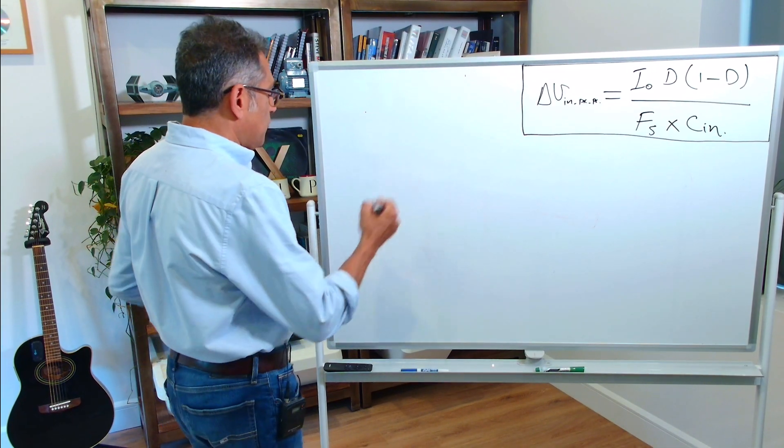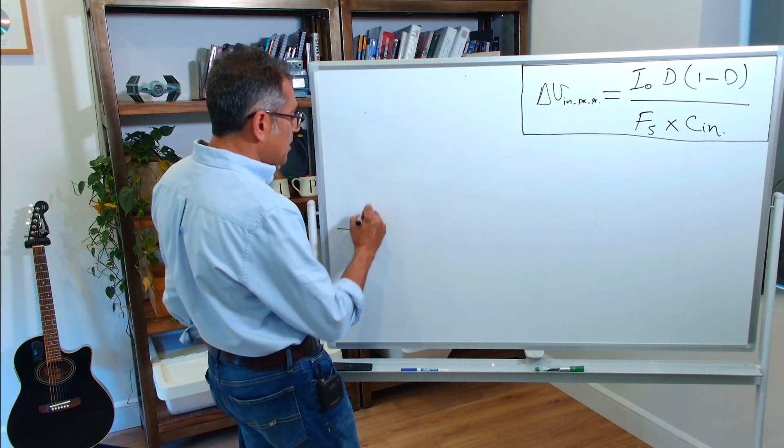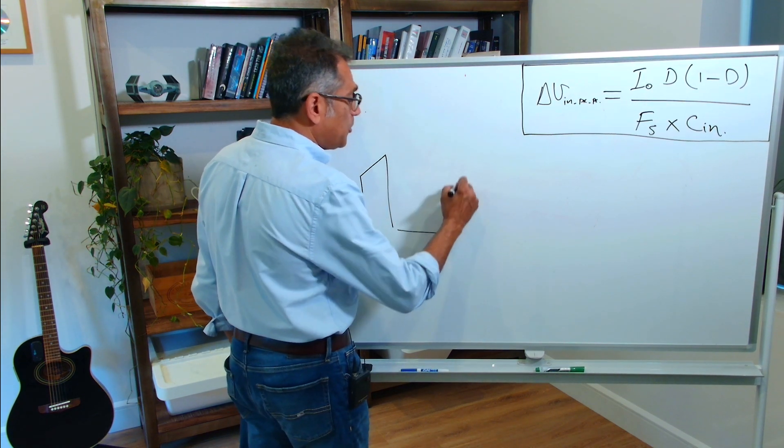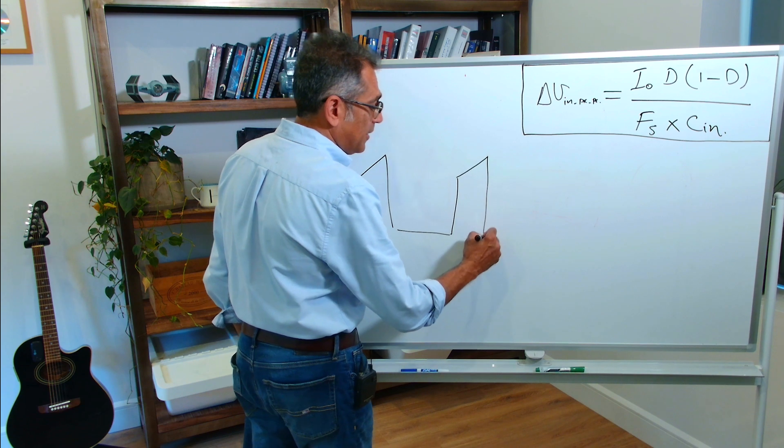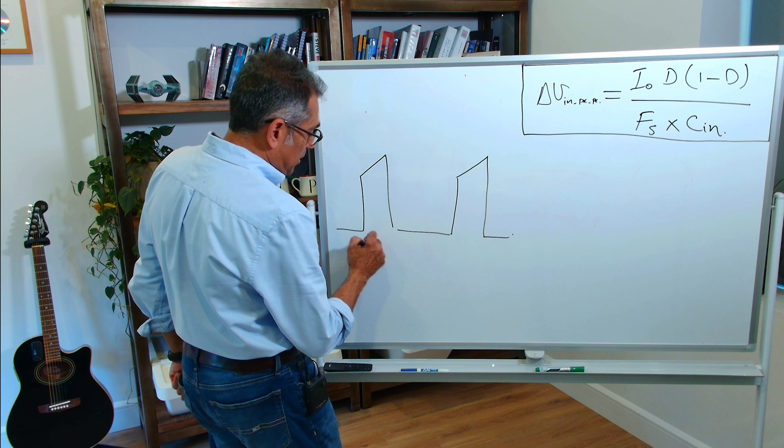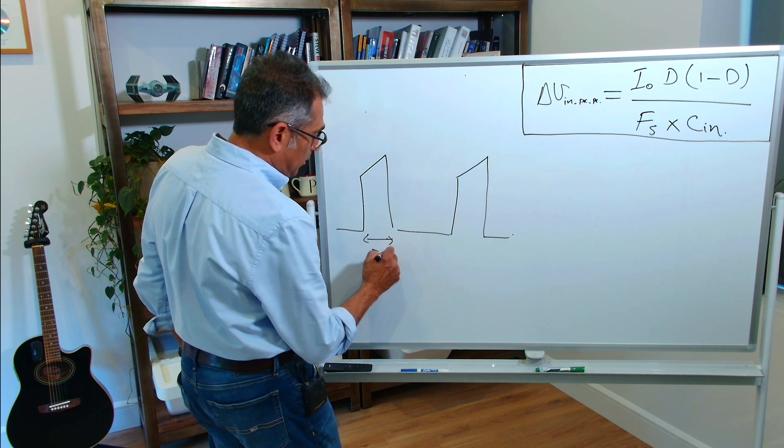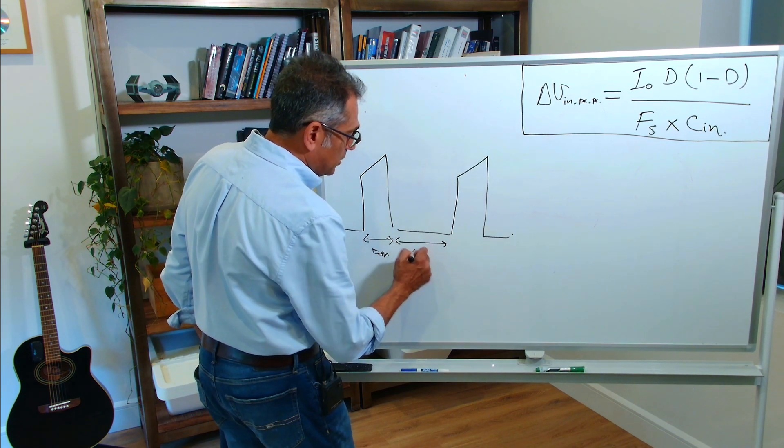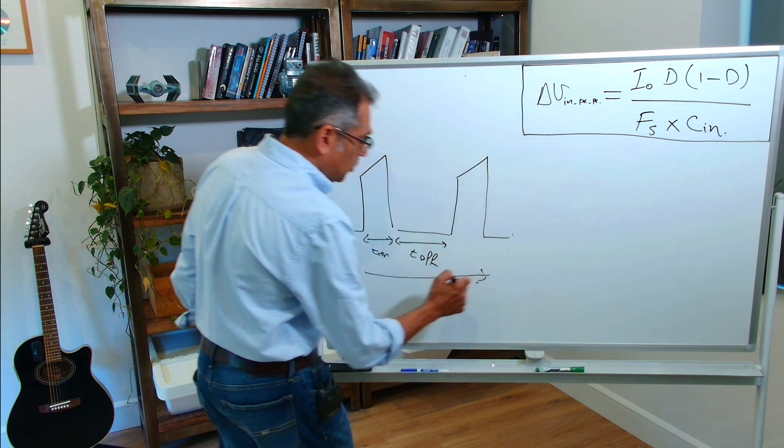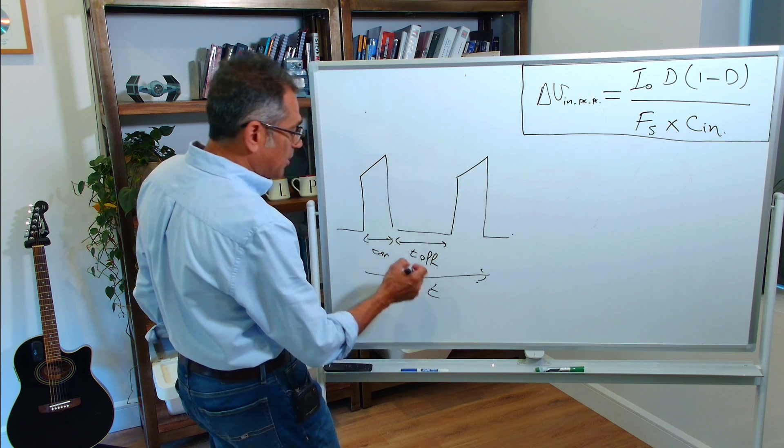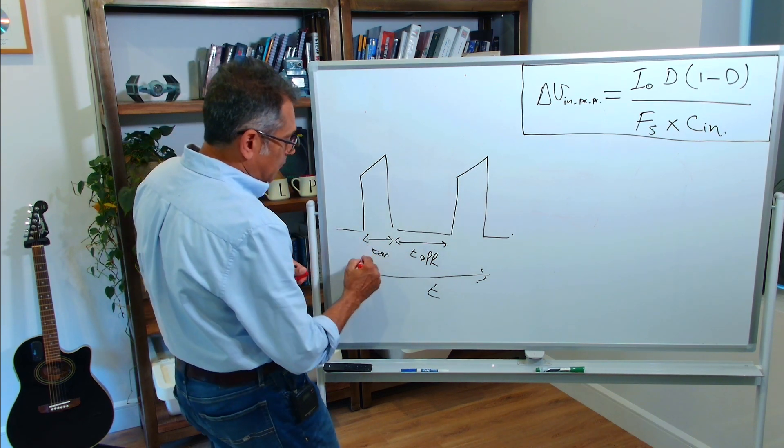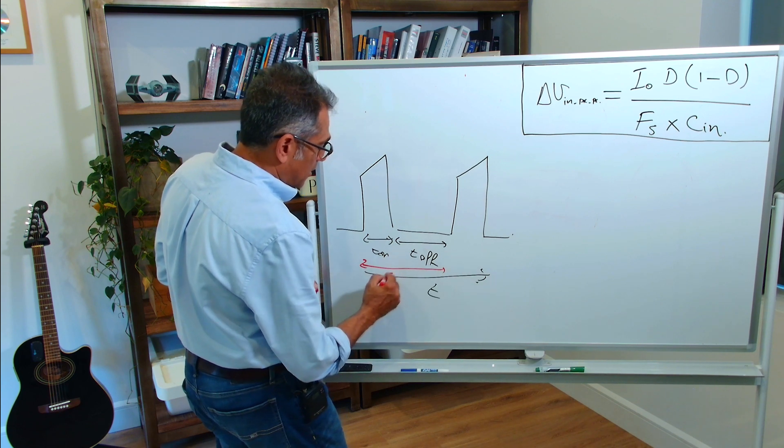for simplicity, let us say that you've got a buck converter. The shape of the input current without any capacitance whatsoever would look probably something like this. This would be my on period, T on. This would be my off period, T off. This is my switching frequency of 200 kilohertz. This is time. So, if I have a switching frequency of 200 kilohertz, then from there to there will be around 5 microseconds.